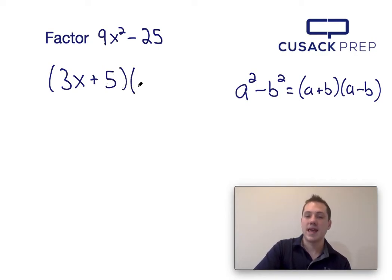So since I know what a and b are equal to, I can plug those values into the right hand side of my equation, and I find that 9x squared minus 25 factors into 3x plus 5 times 3x minus 5.